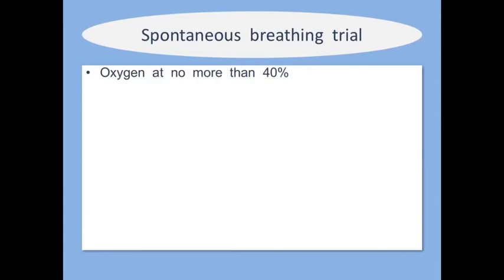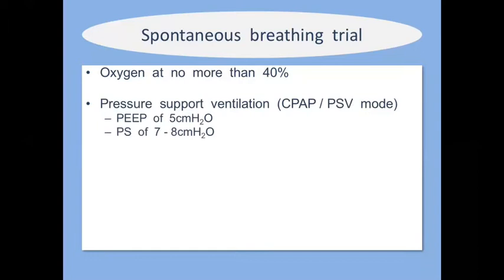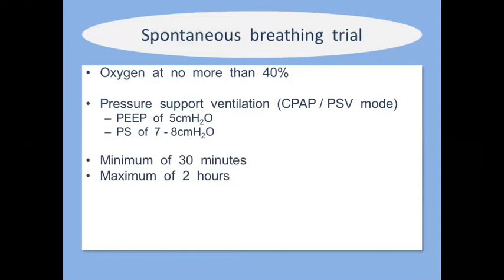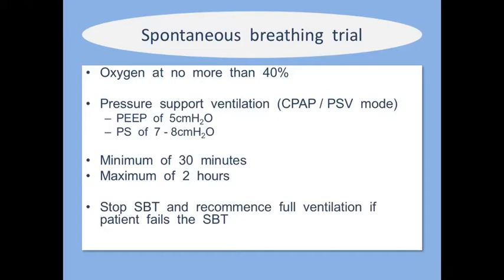Try not to perform spontaneous breathing trials when patients are receiving FiO₂ above 40%. Normally we use PEEP of 5 and pressure support of 7–8 cmH₂O. It's important not to make the trial too short or too long — the patient should cope for at least 30 minutes but no longer than two hours. There is nothing to be gained by continuing beyond two hours. If there is any sign the patient is failing the spontaneous breathing trial, stop it immediately and recommence full ventilation — don't push on waiting for the 30-minute or two-hour mark.